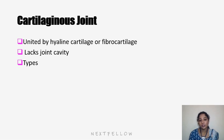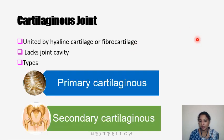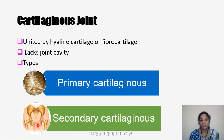Cartilaginous joints are those where bones are united by two types of cartilage: hyaline cartilage and fibrocartilage (white fibrous cartilage). They lack a joint cavity. The two types are primary and secondary cartilaginous joints. Primary cartilaginous joints include costochondral joints between the sternum and ribs; secondary cartilaginous joints are symphyses, usually seen in the midline — for example, the pubic symphysis.